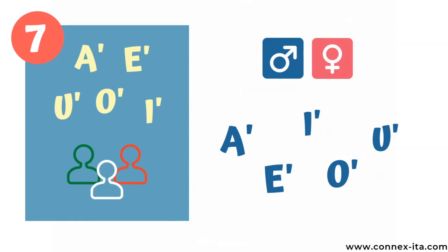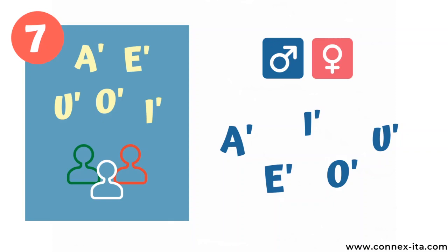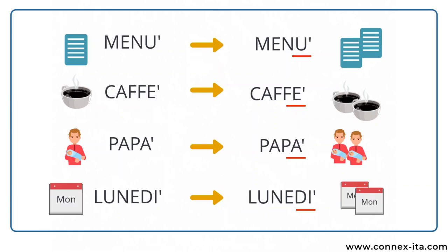We've done the hard part! The last ones are very easy. When the last letter — always a vowel — has an accent, then the plural is the same as the singular form. So look at the following examples: menu, caffè, papà, lunedì — they don't change in the plural. Menu, caffè, papà, lunedì.